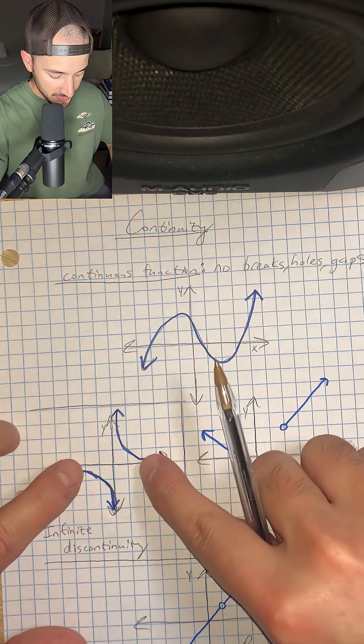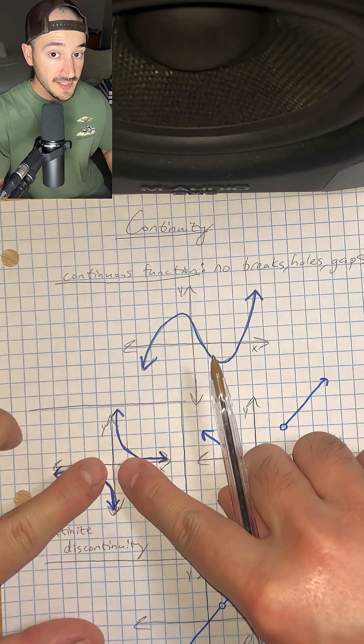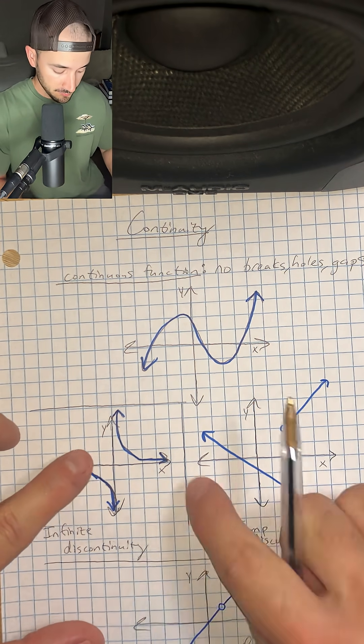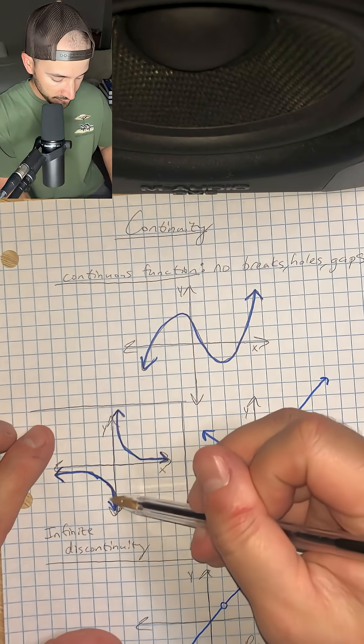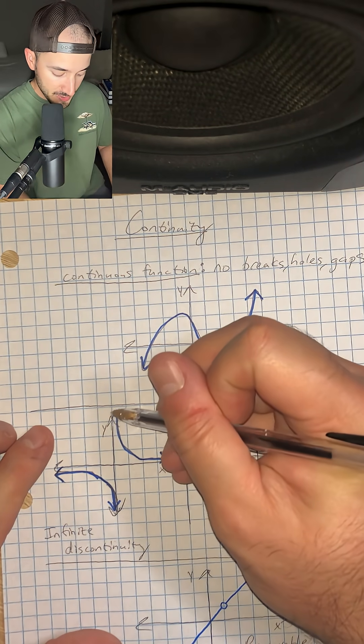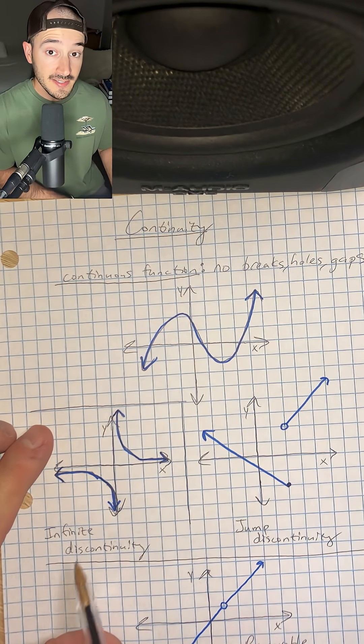which means as we approach some x value, the function, or y value, either increases to positive infinity or decreases to negative infinity. Okay, so see how it's going down forever right here, and it's going up forever up here, right? So there's a space right at x equals zero, and so that's called an infinite discontinuity.